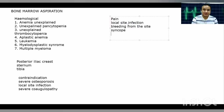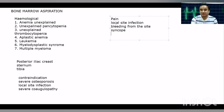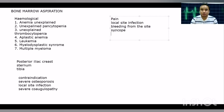To summarize, we have discussed the indications, the sites used for bone marrow aspiration, the contraindications, the complications, and the different needles used. I hope you have understood the basics of bone marrow aspiration. If you have any comments, please write in the comment section. Thank you so much for your kind attention.